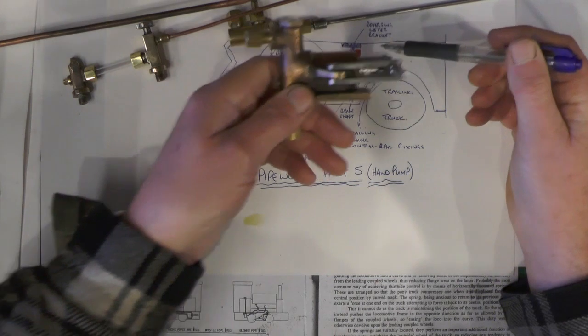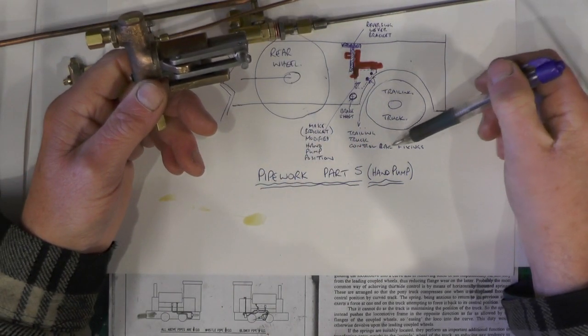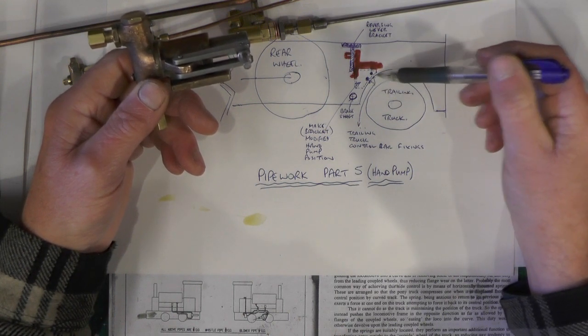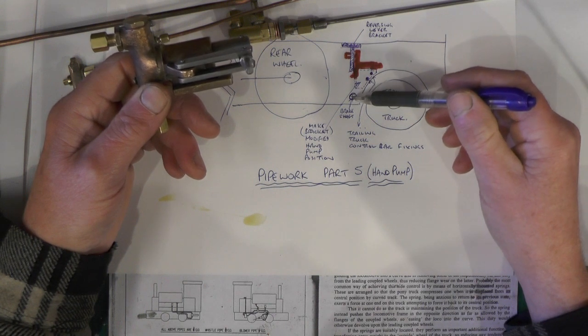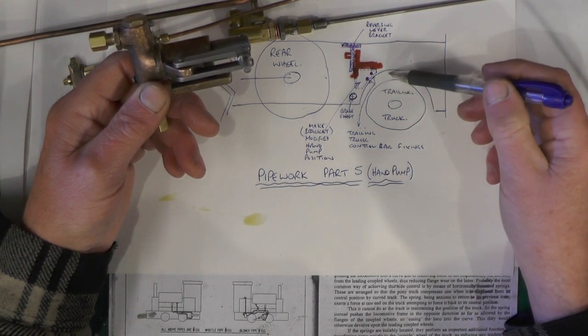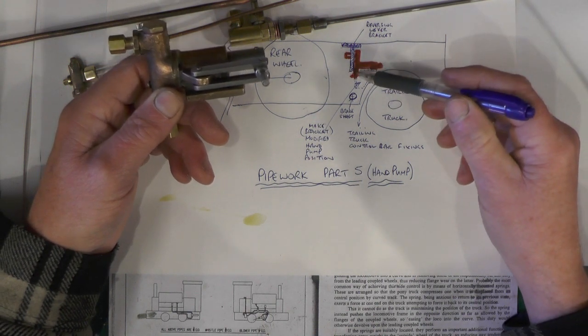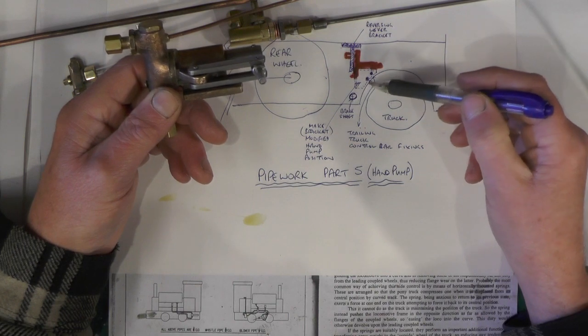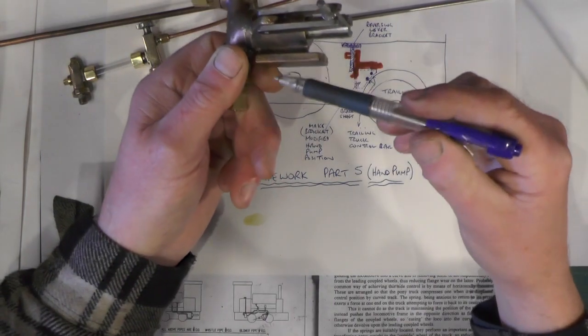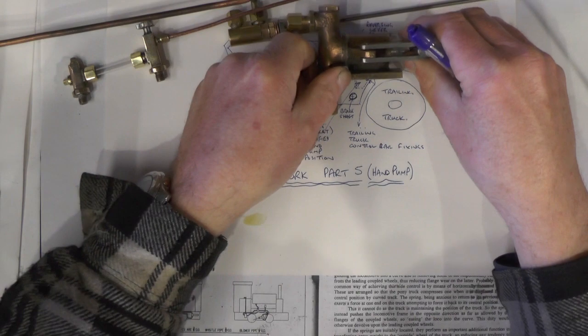Then where the pump's going to come down just here, there's the trailing truck control bar fixings, there's two screws. So I've got to avoid the brake shaft, I've got to avoid this reversing bracket, and I've got to avoid the cutout for the trailing truck. My plan is I'm going to try and fabricate a bracket that contours the frame there so I can sit the pump on this flange that's on the pump onto that bracket.